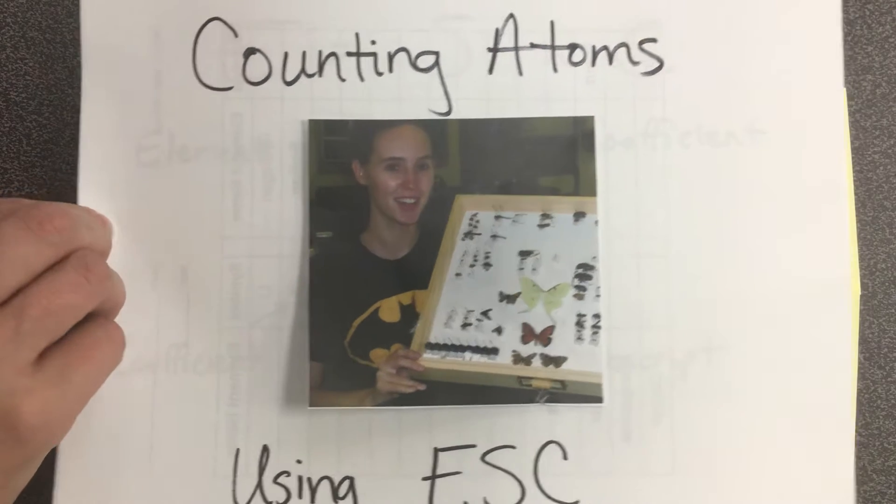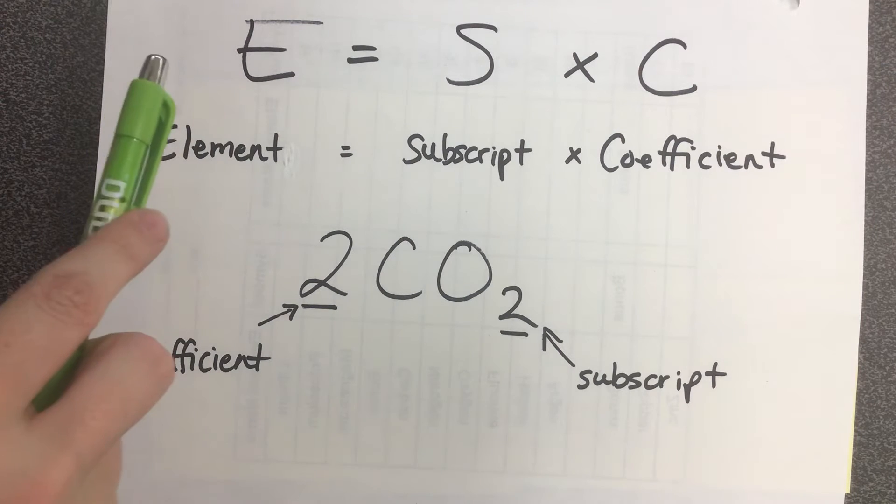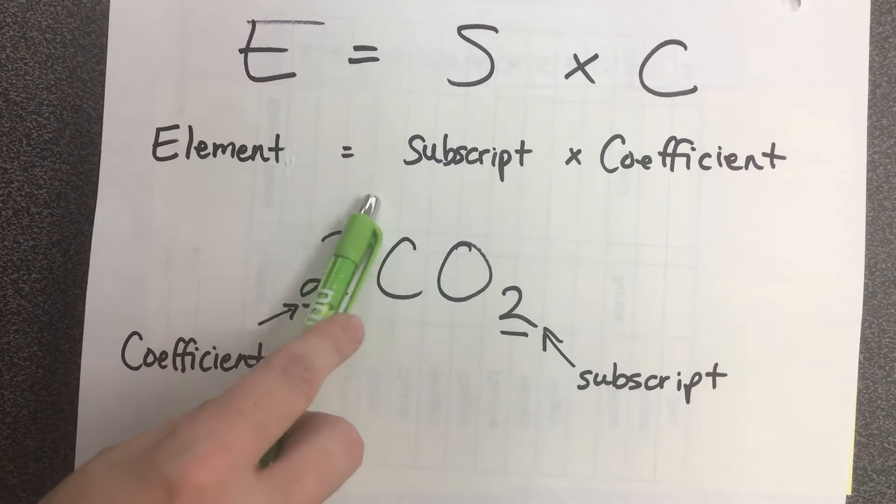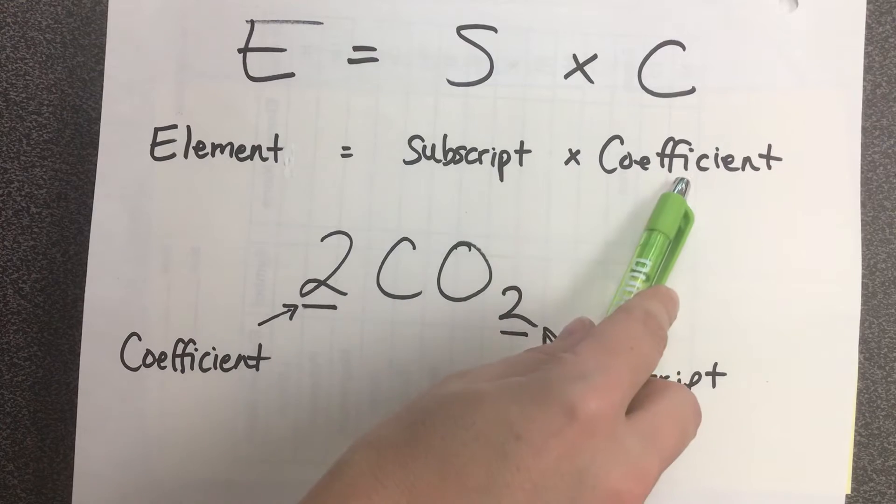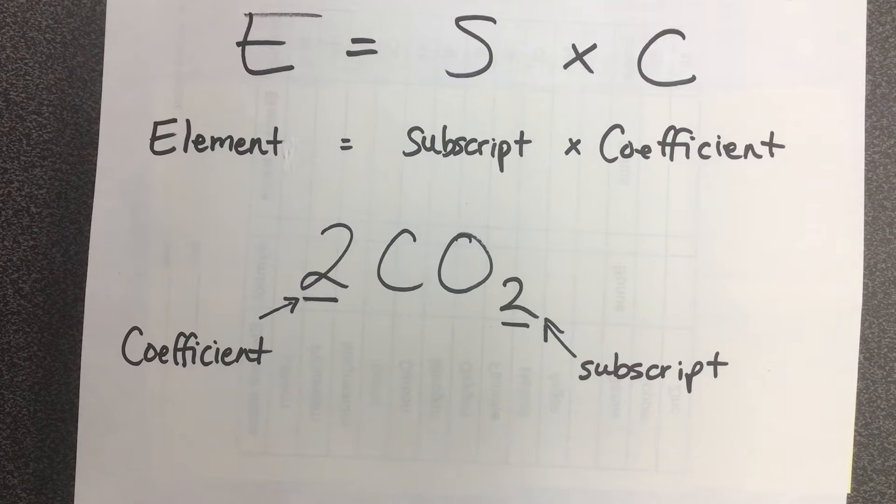So what is the escape or ESC method? That's simply a simplified equation that means the number of atoms of a certain element equal the subscript times the coefficient in the chemical formula that you see.